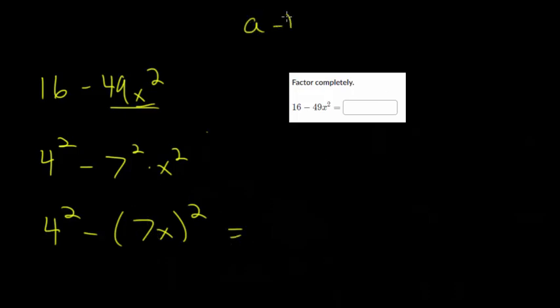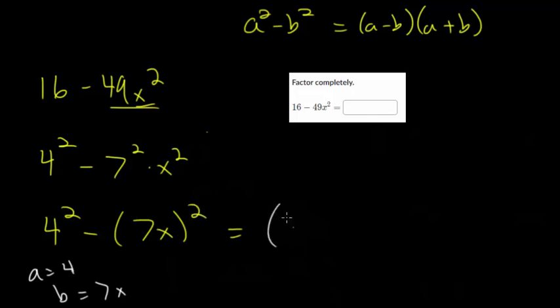Now, remember, it's a squared minus b squared is a minus b times a plus b. So a in this case, we'll say is 4, and b in this case is 7x, since it's that whole thing, that whole 7x that's squared. So then it's the first one, which is 4, minus the second one, 7x. And then it's the first one plus the second one, 7x.